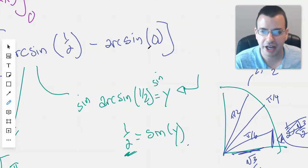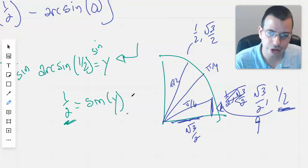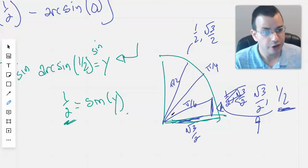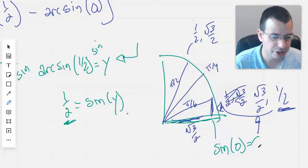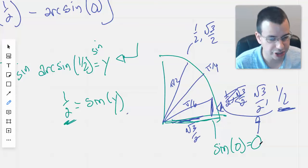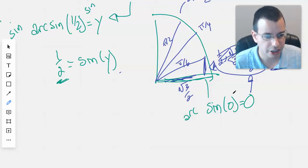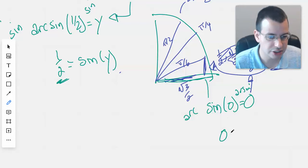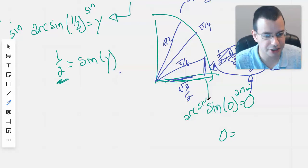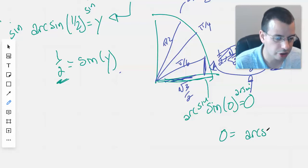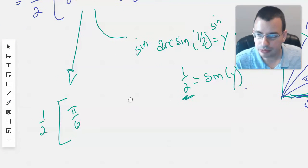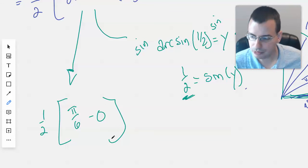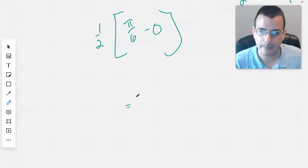And then we want to find out what the arc sine of 0 is. So arc sine of 0 is what value of theta will give us 0 for sine. So we know that sine of 0 equals 0. So arc sine of 0, do the arc sine of both sides, we get 0, because this arc sine cancels out with this sine.